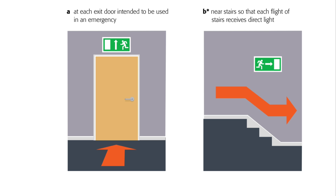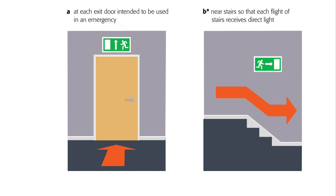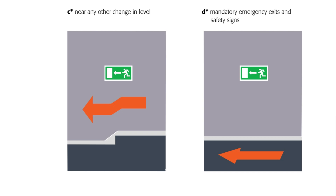It's interesting to note in the illustration that the arrow is pointing up — we're circling that all-important issue of which way signs should point. Near stairs, so that each flight of stairs receives direct light — this is important both so people go the right way and for safety at any other change in level. Wherever there's a step or change in level there's a chance someone could stumble if it's not illuminated well enough.